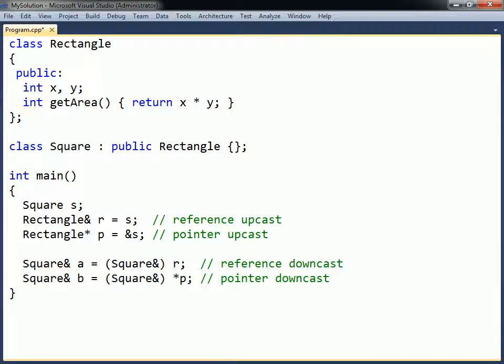A Rectangle reference that points to a square object can be downcast back to a square object. This downcast has to be made explicit, since downcasting an actual rectangle to a square is not allowed.